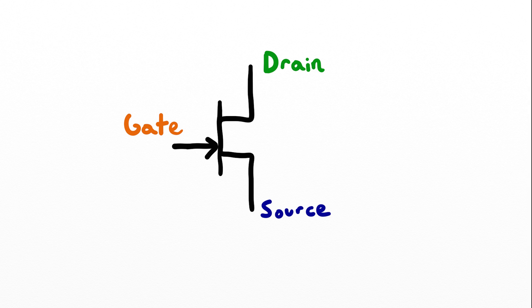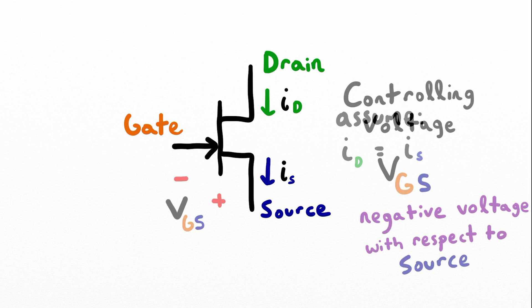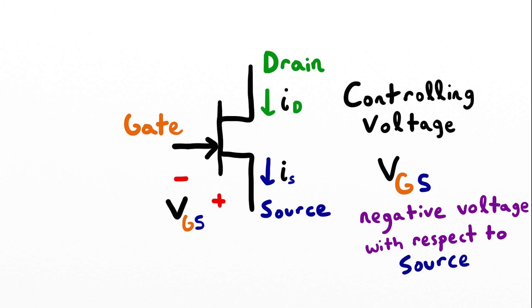To understand the JFET in this application, we need to make the assumption that the drain and the source currents are equal. We also need to understand that the controlling voltage is a voltage applied across the gate and the source.